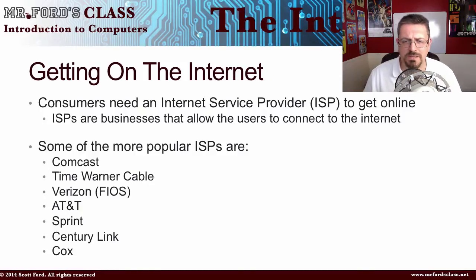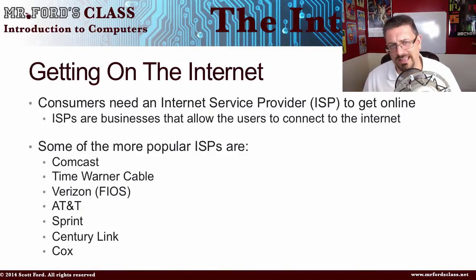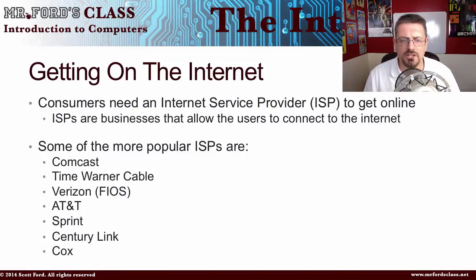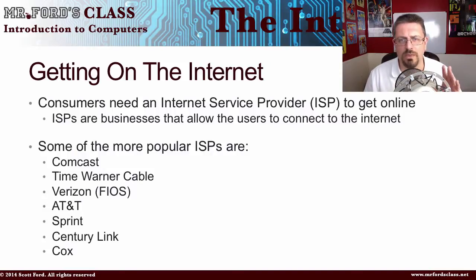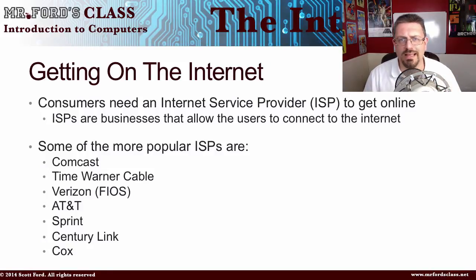Some of the bigger ISPs out there include Comcast, Time Warner Cable — though they were looking at merging, so that could change — Verizon, AT&T, Sprint, CenturyLink, and Cox Cable.